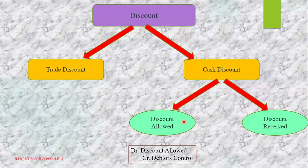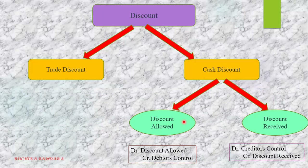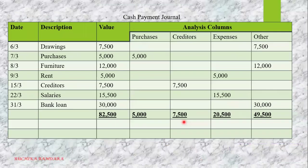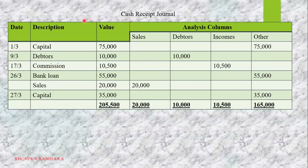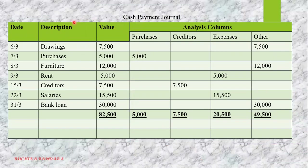The debtor will go down. The double entry for discount received is: debit creditor control (liability goes down), credit discount received (it's an income). Remember, for discount allowed and discount received you will never get an entry with the word cash. But we do record discount allowed and discount received in our receipts and payment journal — in the cash receipt journal, just before the value column, open another column called discount allowed; in the payment journal, open a column called discount received. This is just to show that there is a discount, but when thinking of the double entry, there is no cash entry.